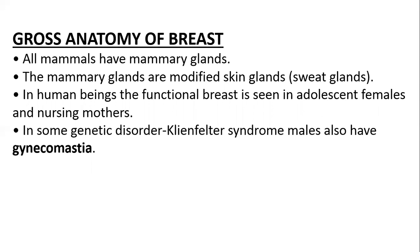Moving towards the gross anatomy of the breast — all mammals have mammary glands; that's why they are called mammals. Mammary glands are modified skin glands or modified sweat glands, becoming functional in adult females or nursing mothers. At times, breast tissue can also be found in men, due to a genetic disorder like Klinefelter syndrome or conditions such as liver cirrhosis.